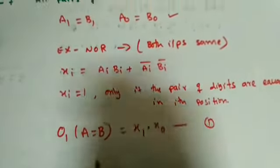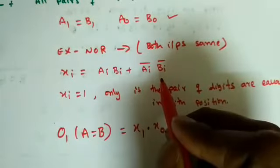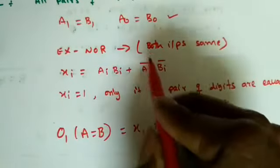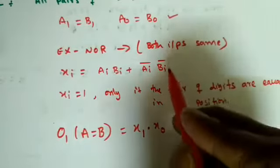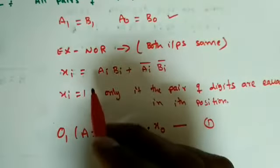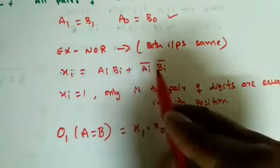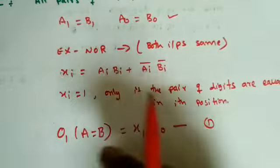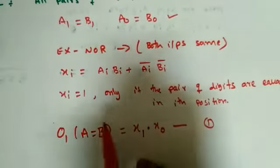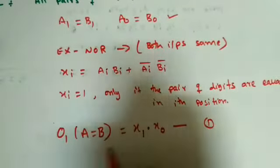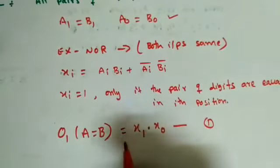We know that if both inputs are equal the logic expression can be defined by the XNOR function. This is the generalized expression. We have two bits so we need two positions, and each position must satisfy the condition to conclude that the two numbers are equal.